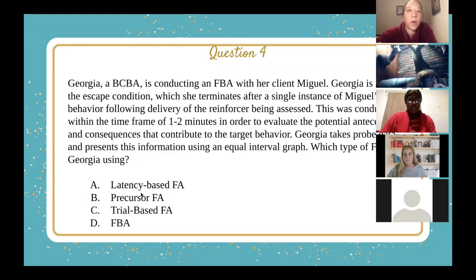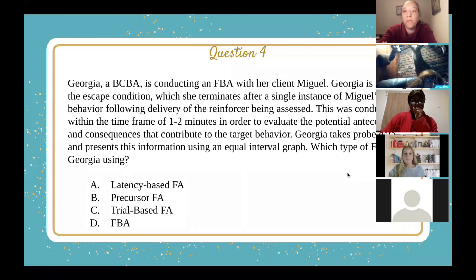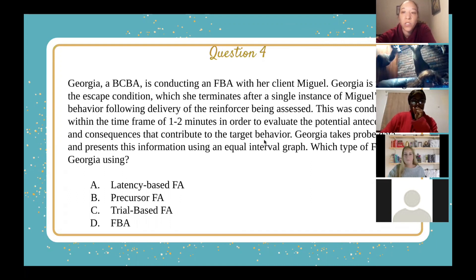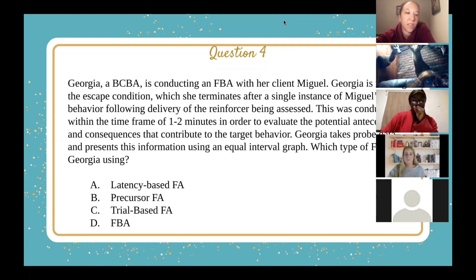Question four: Georgia, a BCBA, is conducting an FBA with her client Miguel. Georgia is running the escape condition, which she terminates after a single instance of Miguel's target behavior following the delivery of the reinforcer being assessed. This was conducted within the frame of one or two minutes in order to evaluate the potential antecedents and consequences that contribute to the target behavior. Georgia takes probe data and presents this information using an equal interval graph. Which type of FBA is Georgia using? A, latency-based FA; B, precursor FA; C, trial-based FA; D, FBA.